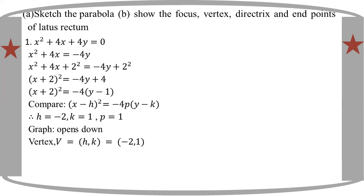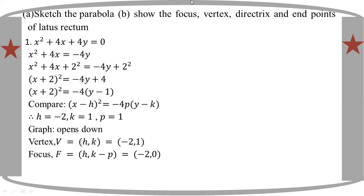The focus is also at (minus 2, 1) adjusted by p. Using k minus p and k plus p: the focus is at (h, k minus p), and the directrix is y equal to k plus p. If the focus is at k minus p, then the directrix is k plus p, and vice versa.